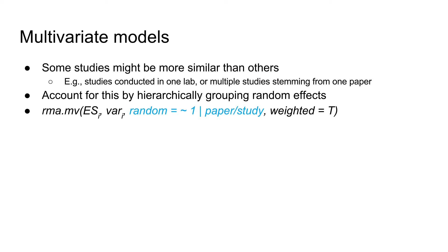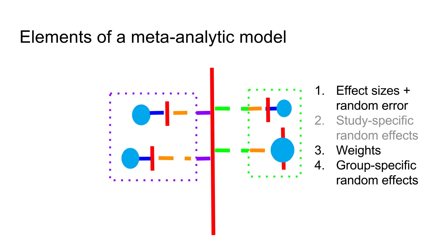A final consideration is that some studies might be more similar than others — for instance, studies conducted in one lab or studies stemming from the same paper. We can account for this by hierarchically grouping random effects. Zooming into a few effect sizes, we can see that this leads to the addition of random effects that are shared within a specific group, for instance effect sizes stemming from the same paper. Congratulations! You now have a meta-analytic model.